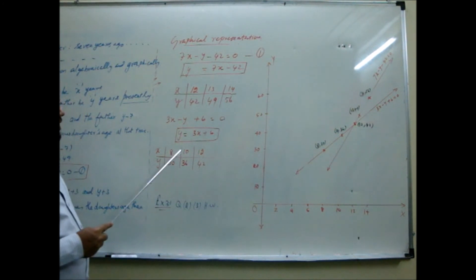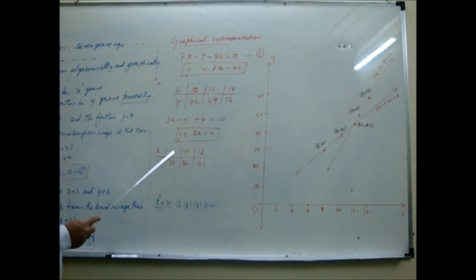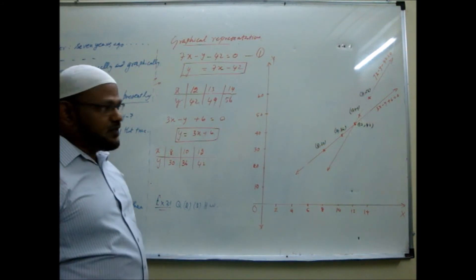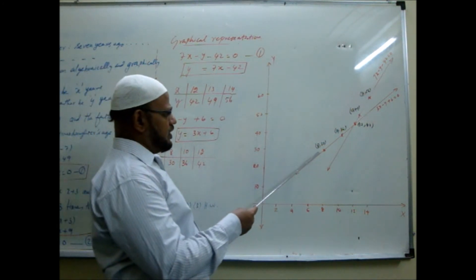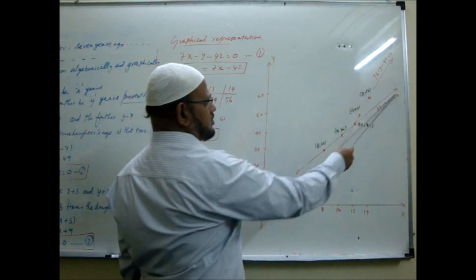Like this, go to the other equation. Here also substitute the suitable values. So at x is 8, if I put, you are coming 30. 10 I put, 36 coming. 12 I put, 42 coming. So these also, these 8, 30, 10, 36, 12, 42, you plot and draw on the same graph sheet the second line. Second line has been drawn like this here. These two.